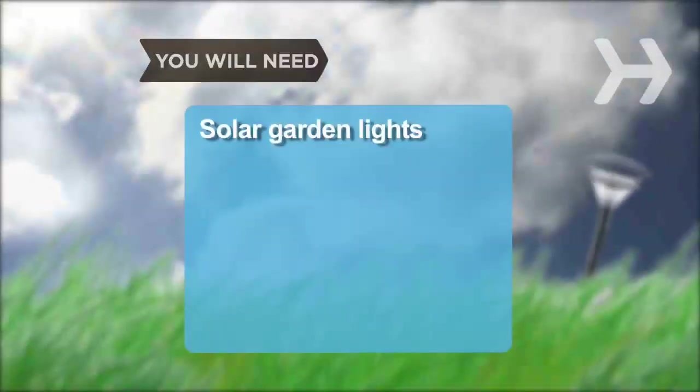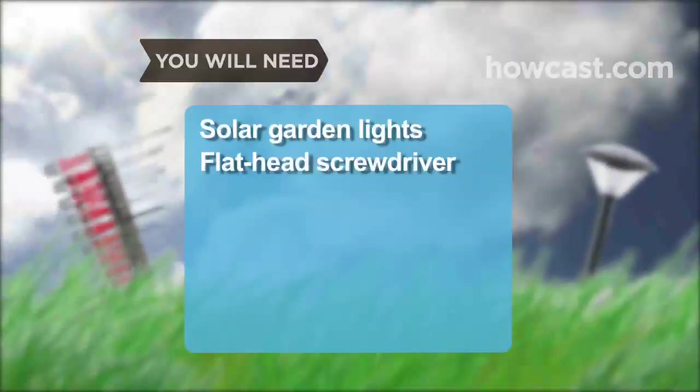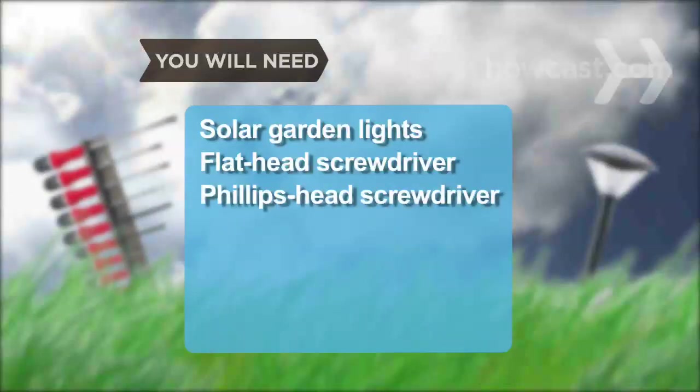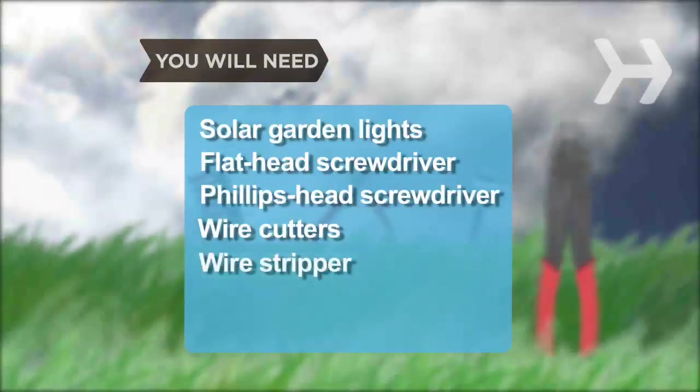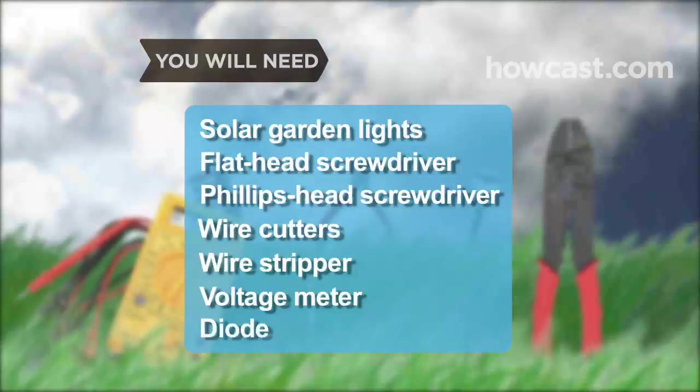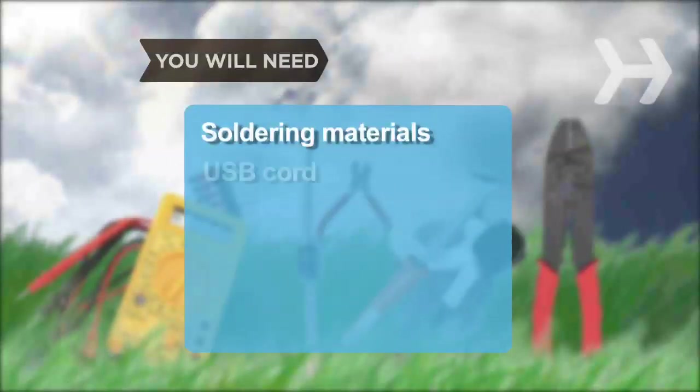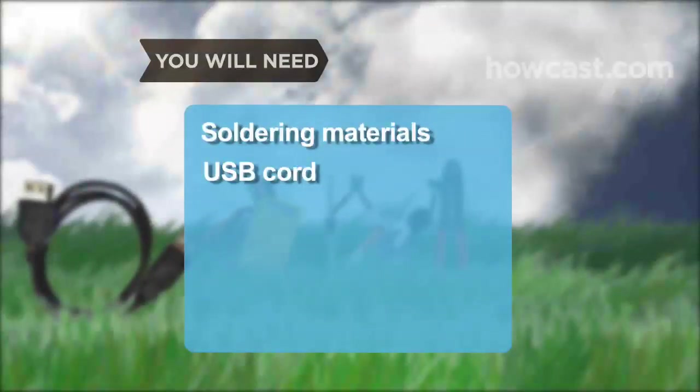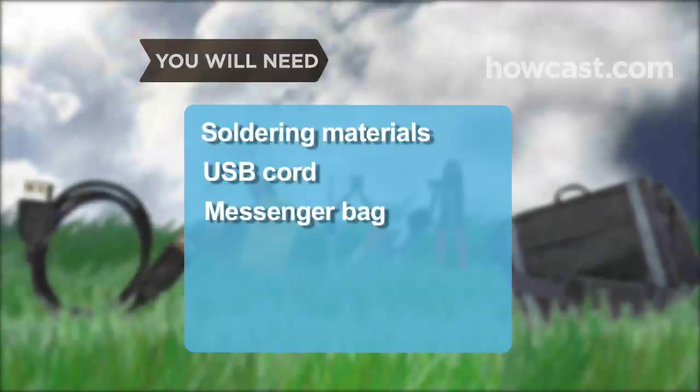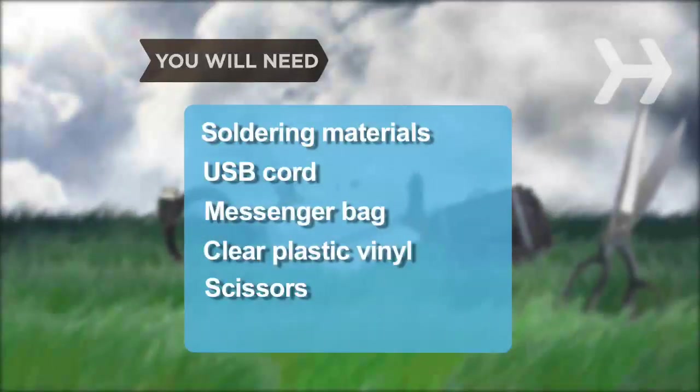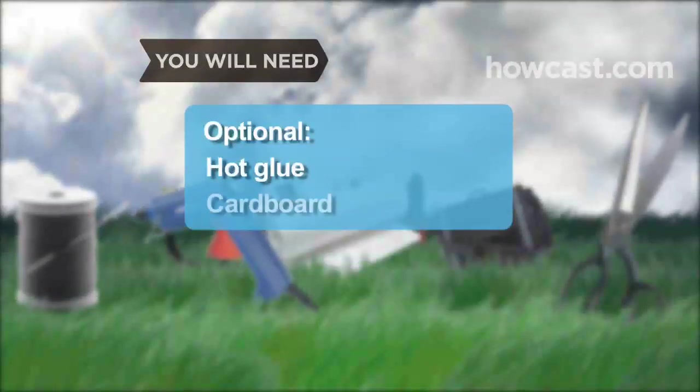You will need solar-powered garden lights, a flathead screwdriver, a Phillips-head screwdriver, wire cutters, a wire stripper, a voltage meter, a diode, soldering materials, a spare USB cord for your device, a messenger bag or satchel, clear plastic vinyl, scissors, and sewing materials. Hot glue and a piece of cardboard.